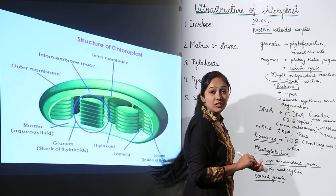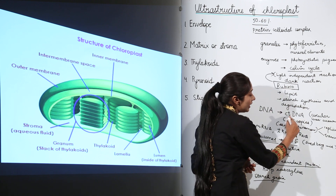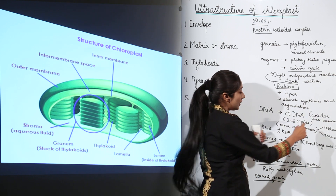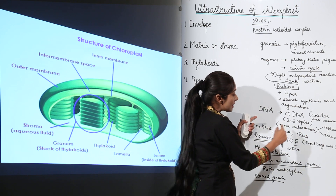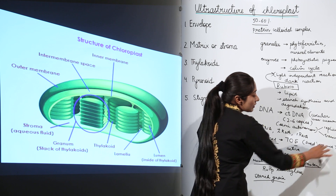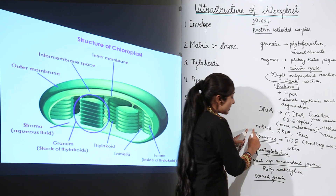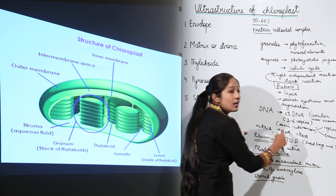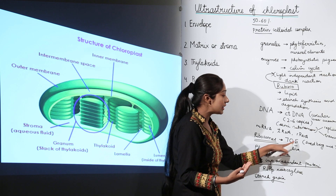The genetic material is in the form of DNA — the chloroplast DNA is called ctDNA. It is mostly circular but can occasionally be linear. There are two to six copies of this DNA, which makes the chloroplast semi-autonomous since it can replicate and perform transcription. There is also the presence of mRNA (messenger RNA), tRNA (transfer RNA), and rRNA (ribosomal RNA).